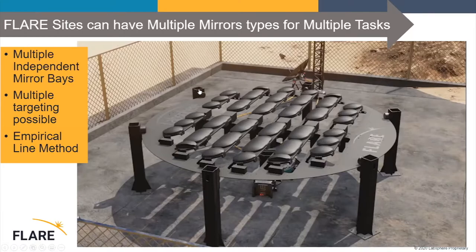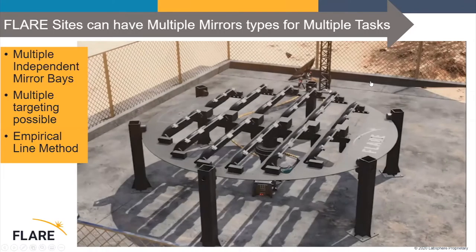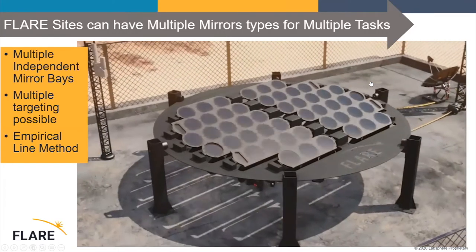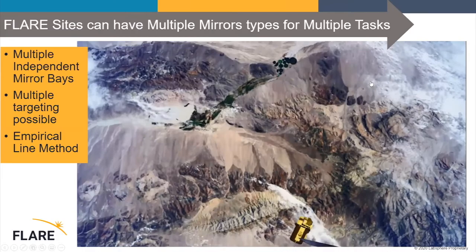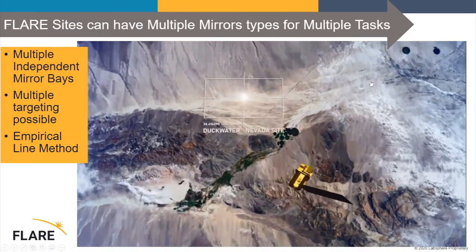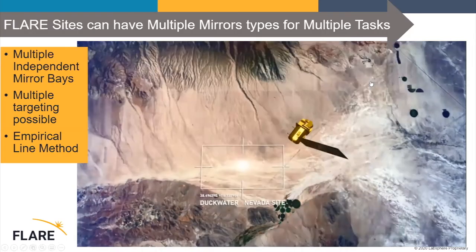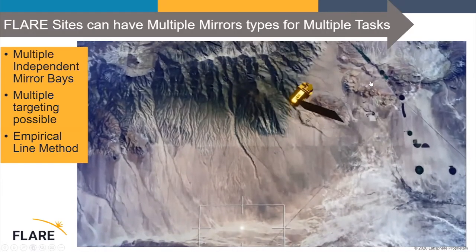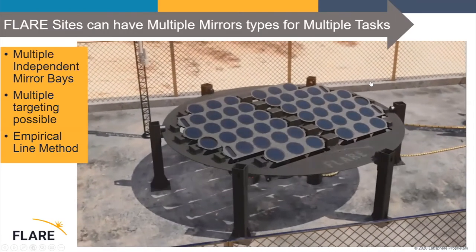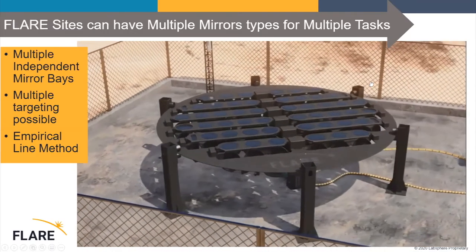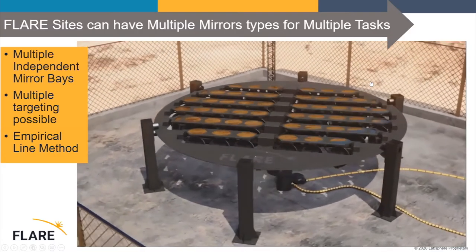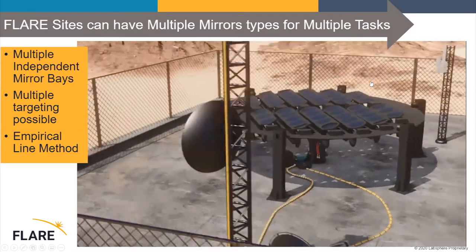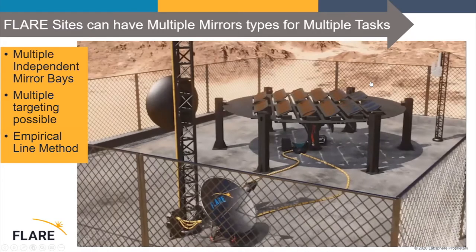Let me show a video of how a Flare system actually looks on the ground. First we open the mirrors up — the covers drop off. Then we find the sun and look for the satellite. Here we are tracking within the satellite's field of regard, so we appear as a point source. We continue tracking the satellite for a few seconds or a few minutes depending on what we're doing, enabling multiple images or multiple mirror configurations for different types of testing.